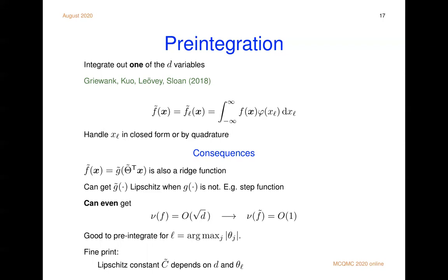So here's what's going to happen. This f tilde is also going to be a ridge function. If you put a ridge function into this pre-integration, then you get a ridge function out of the pre-integration. It'll change g and it'll change theta. It'll still be a ridge function. What you can get though, is you can get a Lipschitz function out when the one that went in wasn't Lipschitz. For example, if a step function goes in, you can get a Lipschitz function out. You can even get that the mean dimension of f grows like square root of d, while the pre-integrated one grows like order one. It's bounded. So that is actually astonishing.